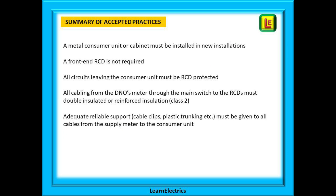If we summarize what we must do when installing a TT consumer unit: a metal consumer unit or cabinet must be installed in new domestic installations. A front-end RCD is not required. All circuits leaving the consumer unit must be RCD protected, and all cabling from the DNO's meter through to the main switch and onto the RCDs must be double insulated or reinforced insulation, making it Class II. Adequate and reliable support such as cable clips and plastic trunking must be given to all cables from the supply meter to the consumer unit, as this will be the weak point in the system.